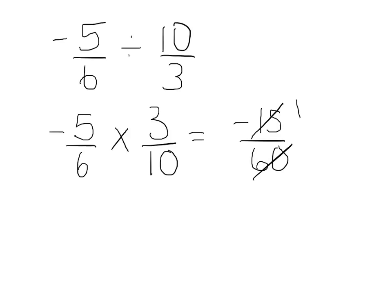So looking at this right away you can also see that 15 goes into both the top and the bottom. Top simplifies to 1, bottom to 4. So we get an answer of negative 1 over 4.